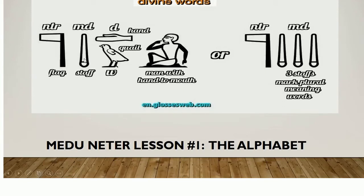This is 'med.' So right here, this is a diphonic sound or biphonic sound, because there are two sounds here — an M and a D sound. And this is a staff, so the divine is standing on its hand. And here is a determinative, which we will also talk about later. Determinatives basically sum up all of this with one symbol.